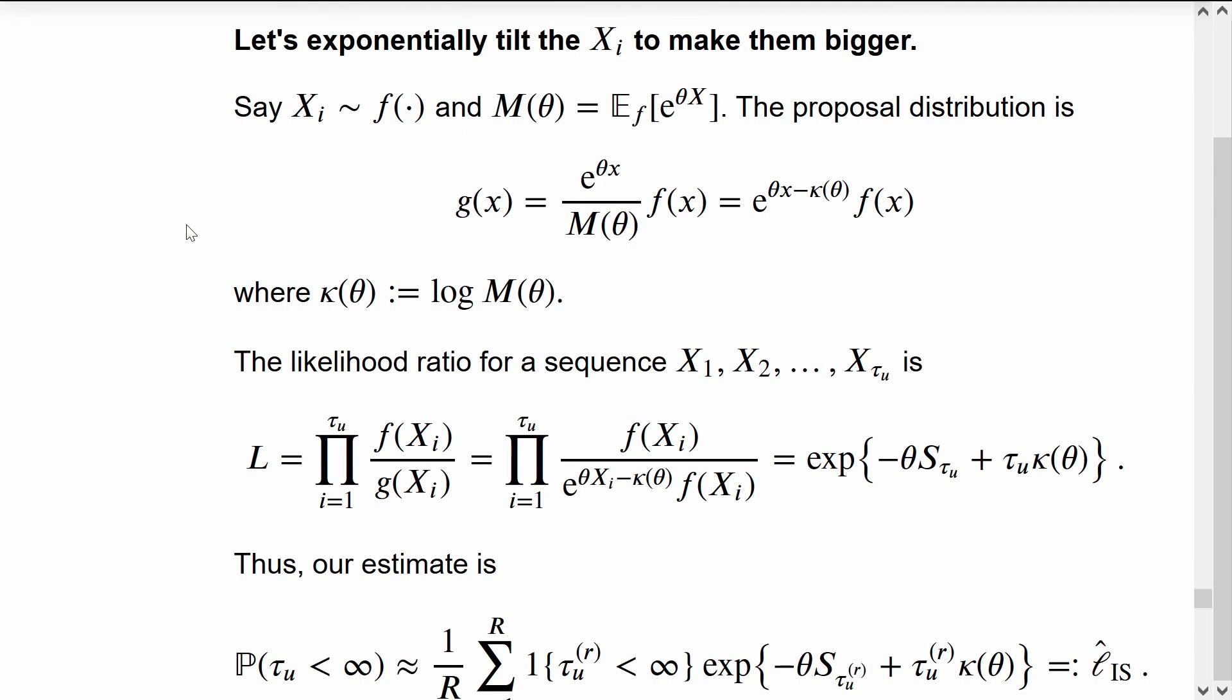We'll use importance sampling in order to see the event of interest, the ruin, happen more frequently.